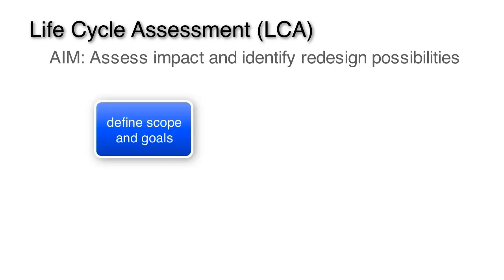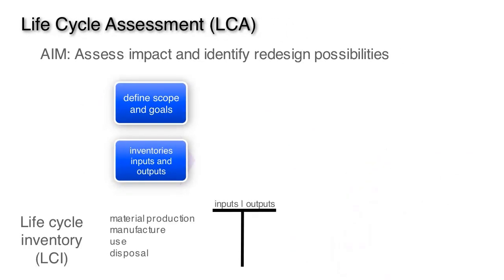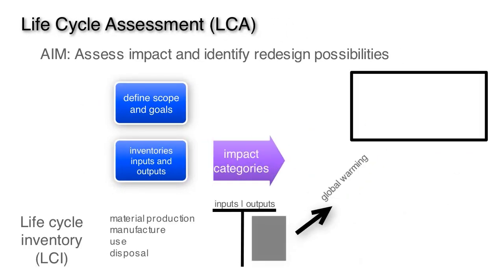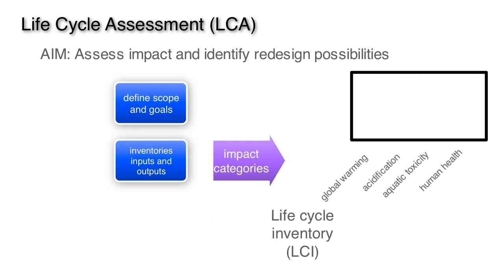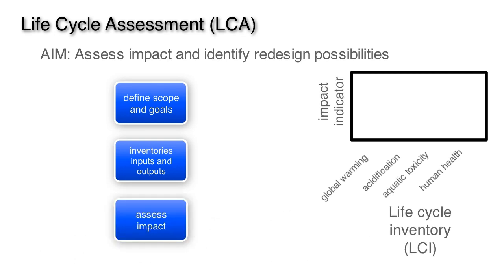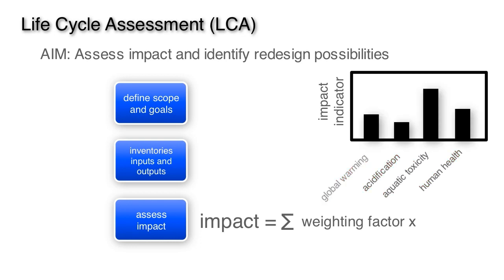In full LCA, after defining the scope of the study, one inventories the inputs and outputs for the entire lifecycle. The next step is to convert the lifecycle inventory to impact categories such as global warming, acidification, aquatic toxicity, and human health. To convert this LCI to an assessment, one then quantifies the impact of the lifecycle by weighting each category of impact and summing the weighted factors to produce an eco-indicator.